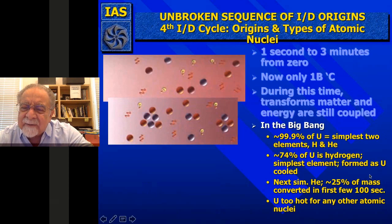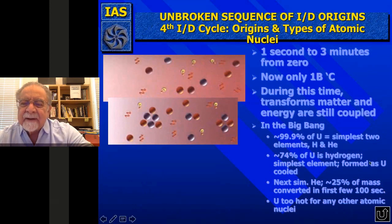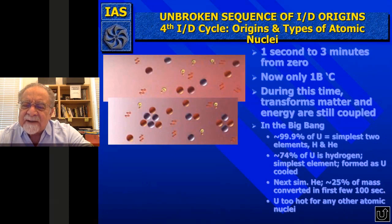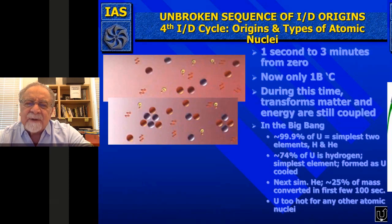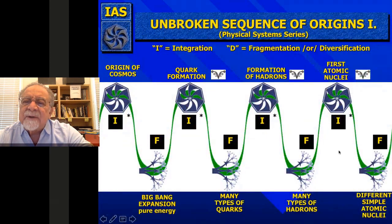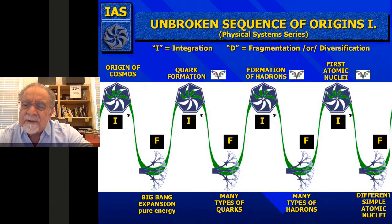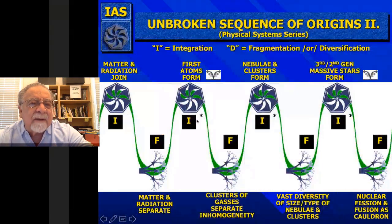Helium represents about 25% of the mass, converted in the first few hundred seconds of the universe. The universe is still too hot for any other atomic nuclei to form. At this time we go integration, fragmentation cycles to the next set, where matter and radiation change, join, and the first atoms begin to form. Here are the actual subatomic particle interactions that give rise to helium from hydrogen. These are much more complex objects than were there in the beginning.